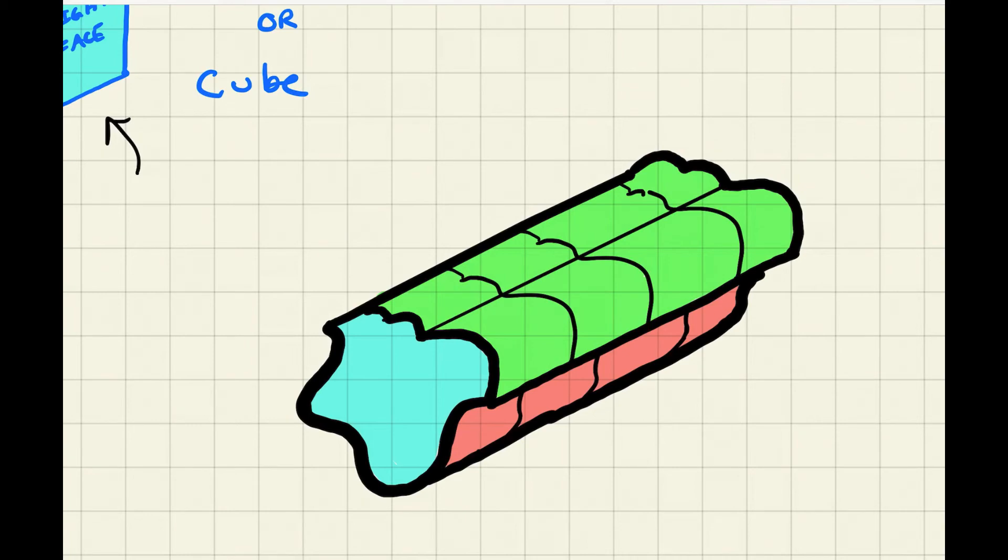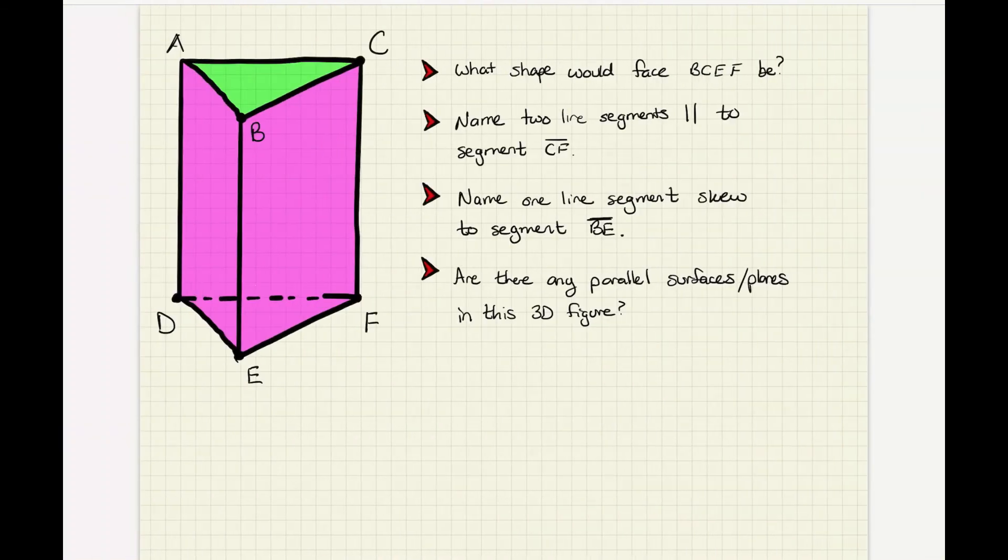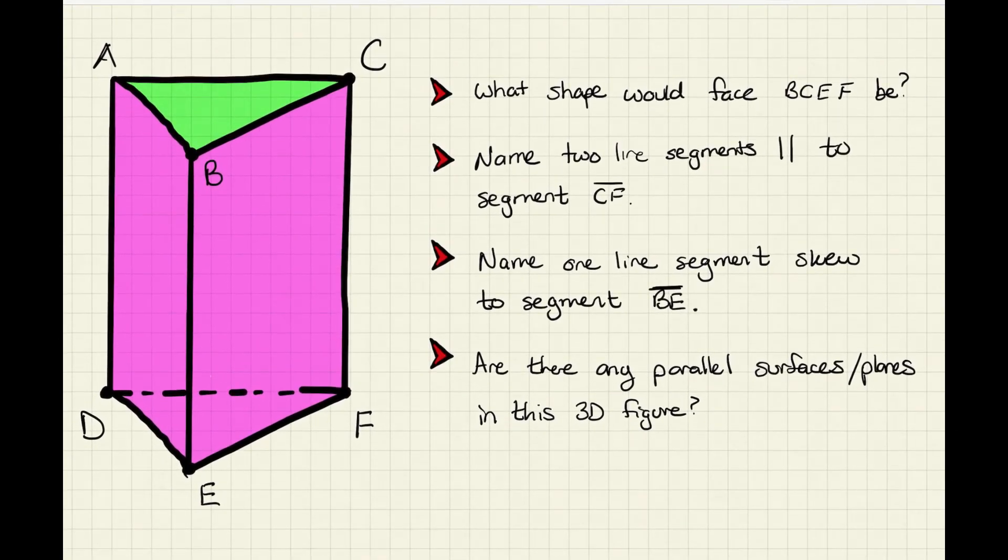Now that we're done with drawing, and you need to have drawn a couple of different three-dimensional shapes for your notes because you're going to need to turn those in to me. I want you to go ahead and take a look at this last example. In this last example, we're going to also take a look at looking at three-dimensional shapes and figuring out information that we've already covered. So think of this as more like a review. The first question here is going to focus on what shape would face BCFE be? What face would that be?